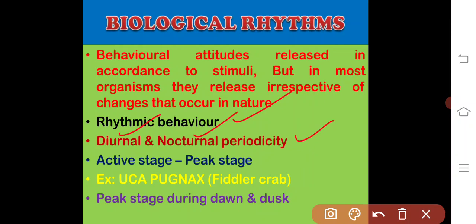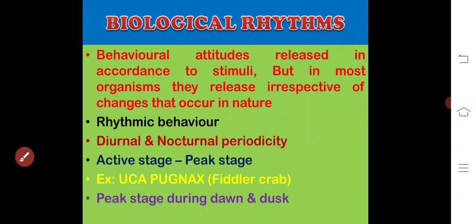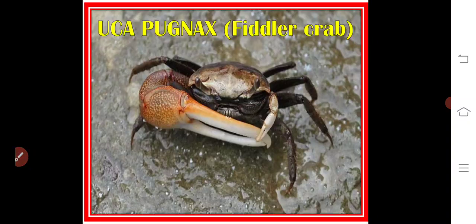Whenever the organism is active at a certain stage, their behavior is in a peak stage within the active period. At a certain point, the behavior is in the peak stage. For example, if you observe the Uca pugnax, the fiddler crab, the peak stage may be twice in a day.